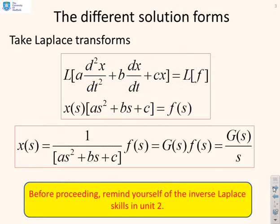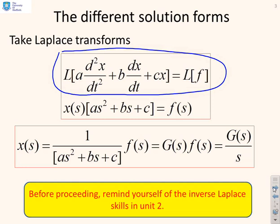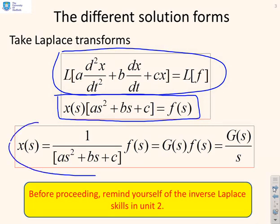The first step is to take Laplace transforms of all the components in this differential equation. Looking at the left-hand side and right-hand side, we end up with an expression where X(s) — the Laplace transform of x(t) — times (as² + bs + c) equals F(s), which is the Laplace transform of f.